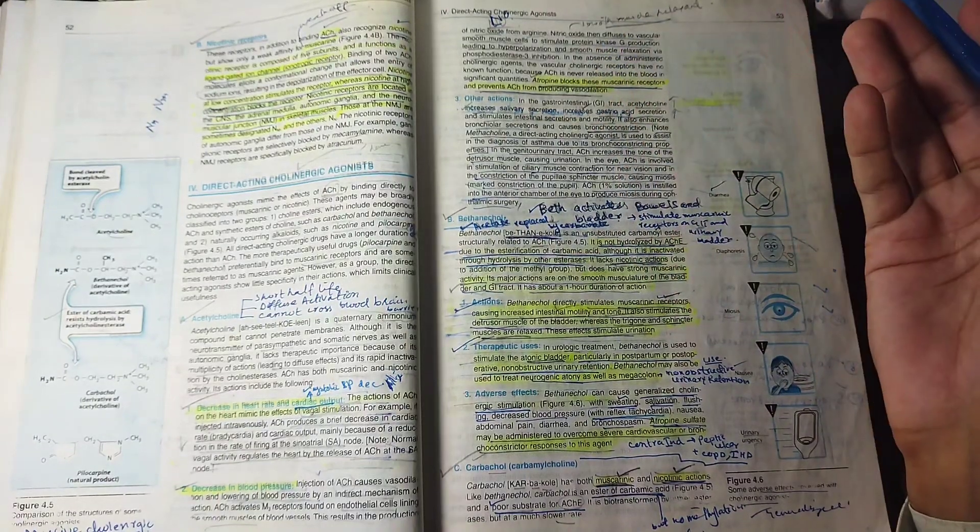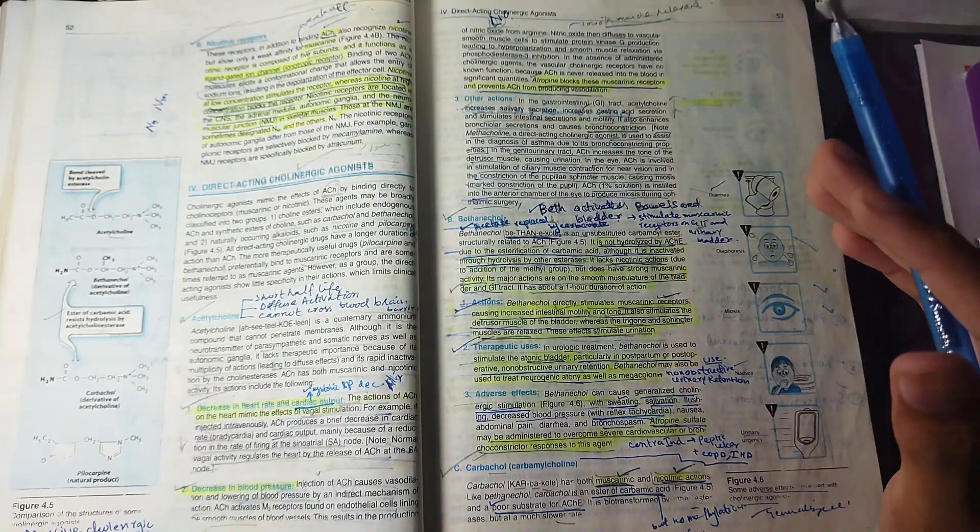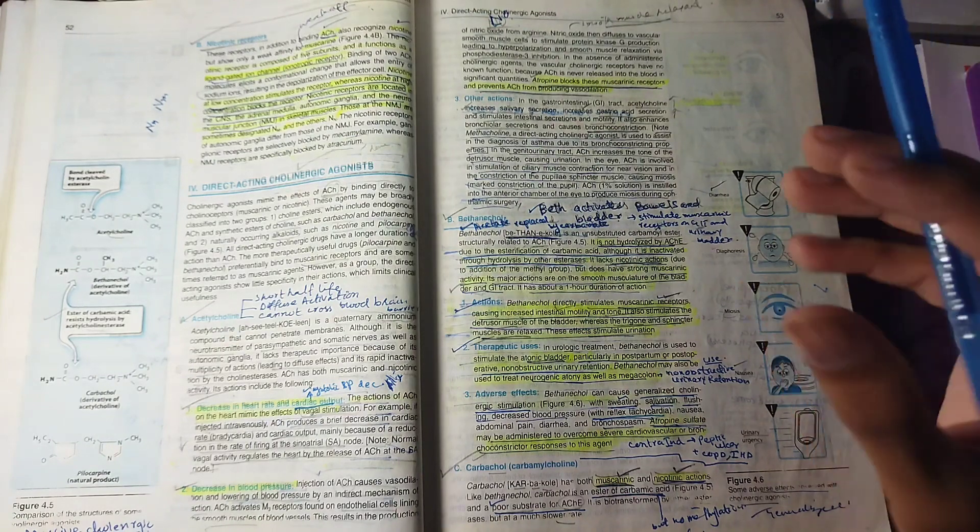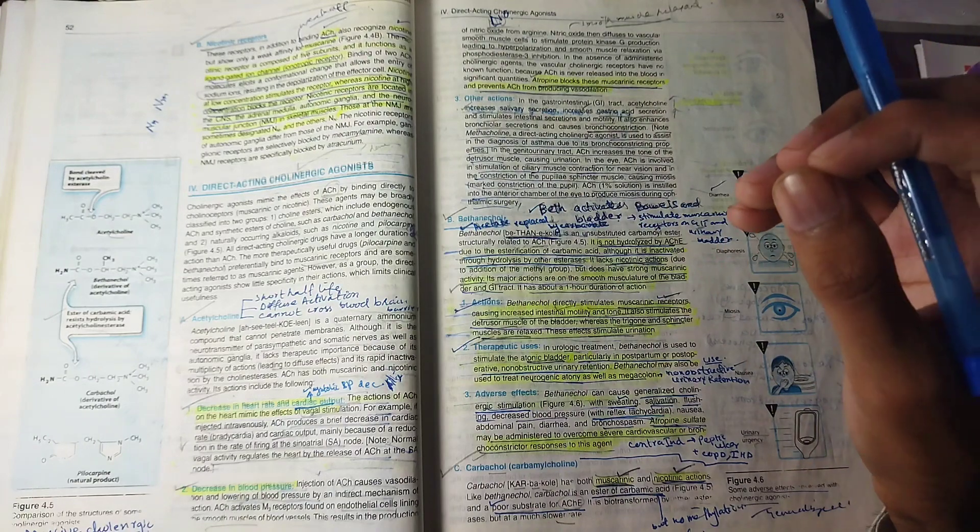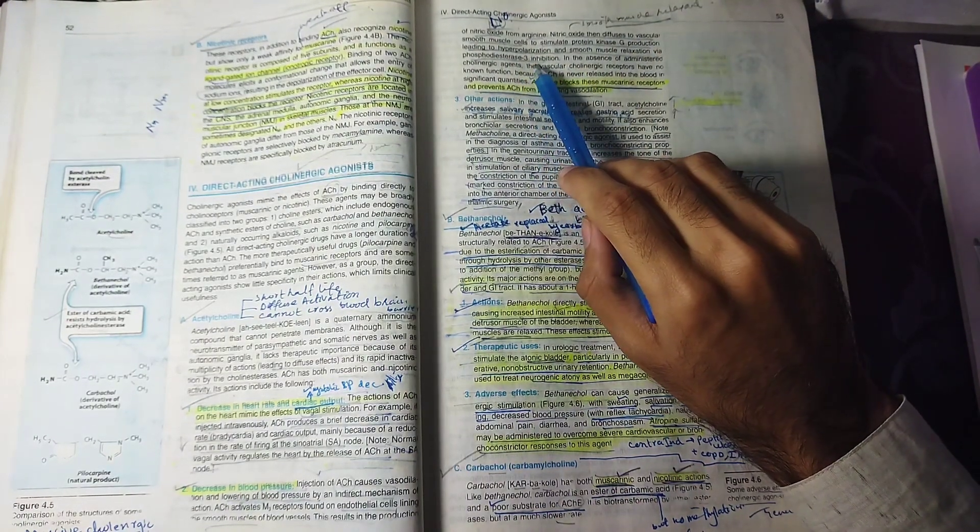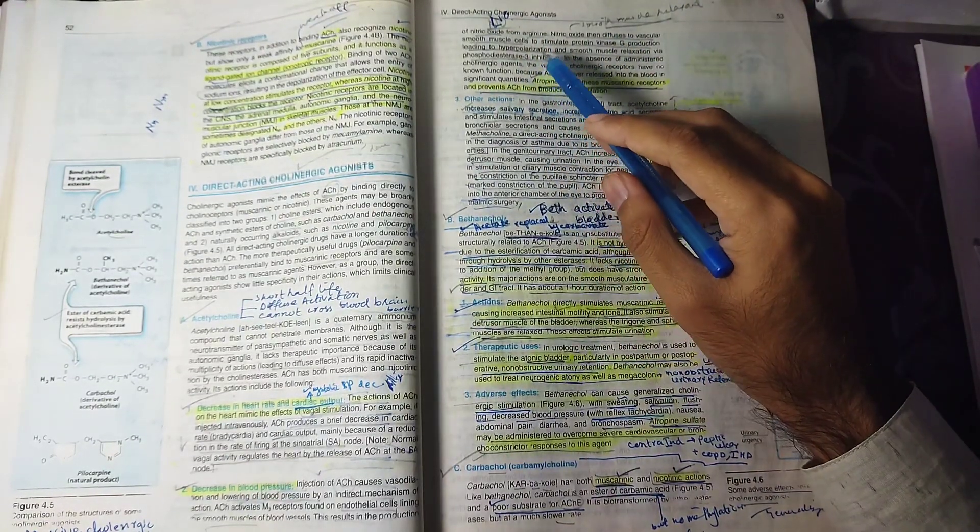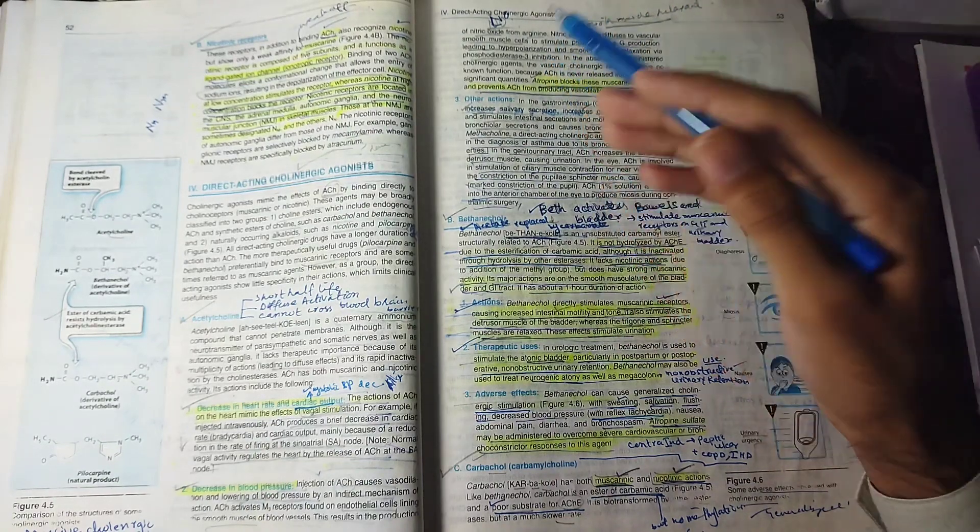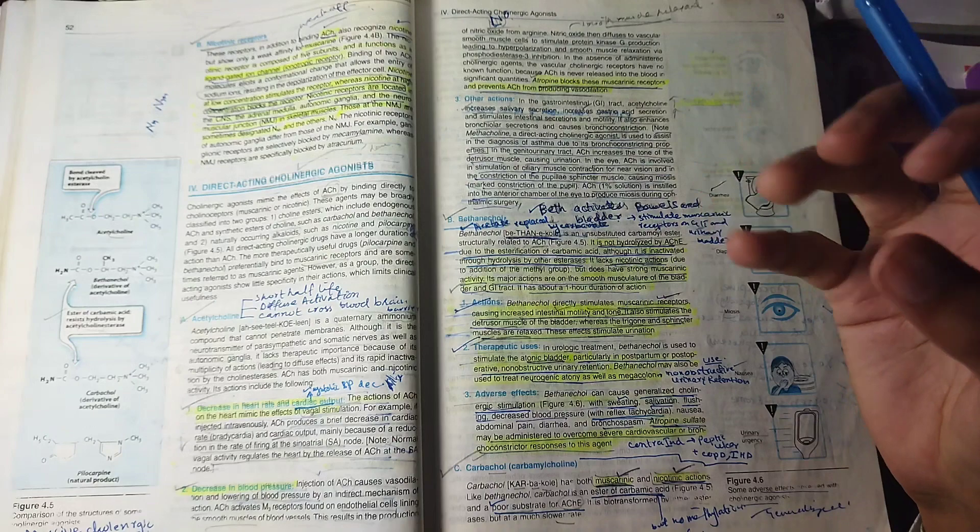The smooth muscle relaxant effect occurs because acetylcholine stimulates vascular smooth muscle, producing protein kinase G. This causes hyperpolarization and smooth muscle relaxation via phosphodiesterase 3 inhibition. The phosphodiesterase enzyme breaks down cyclic GMP. When cyclic GMP increases, you get relaxation.